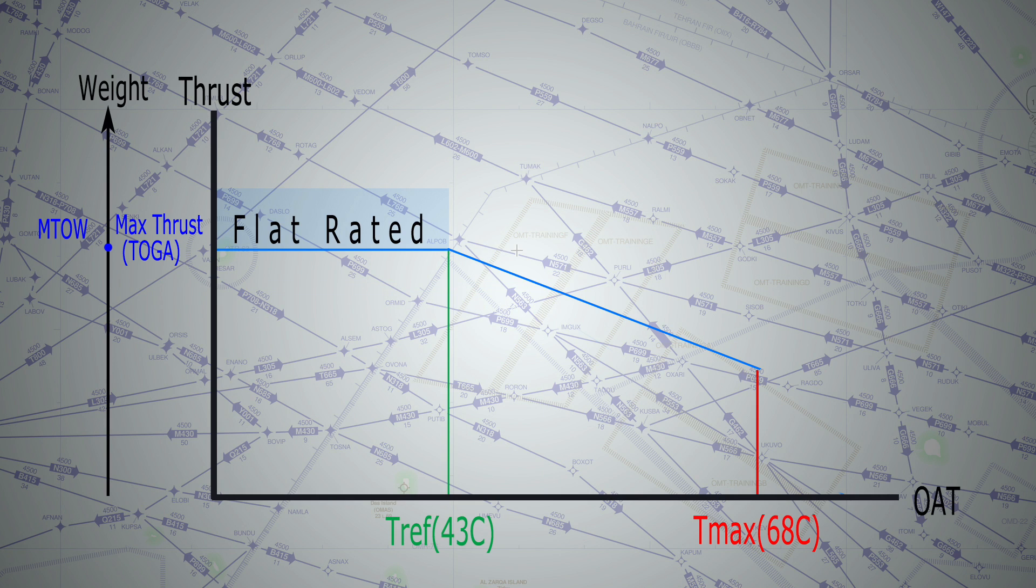Here's a different scenario. Let's say for example today the temperature is 21 degrees. This will give us a flat rated power which will be equivalent to maximum takeoff weight of 77 tons for, say, Airbus 320, very good performance.